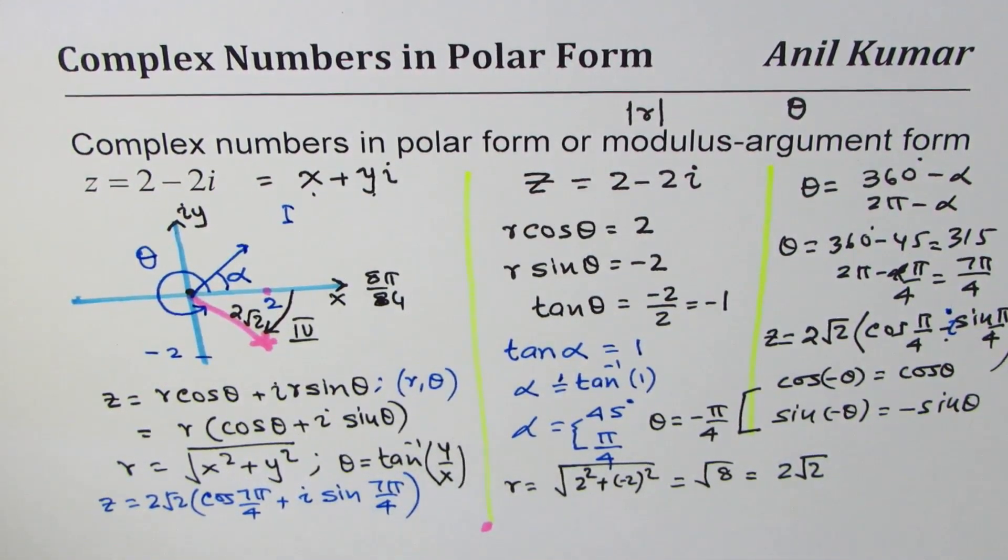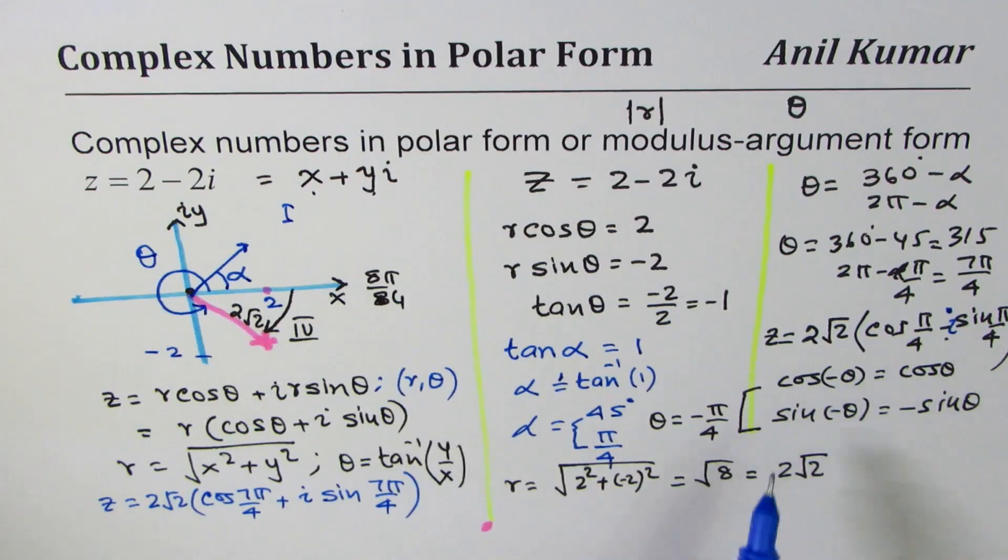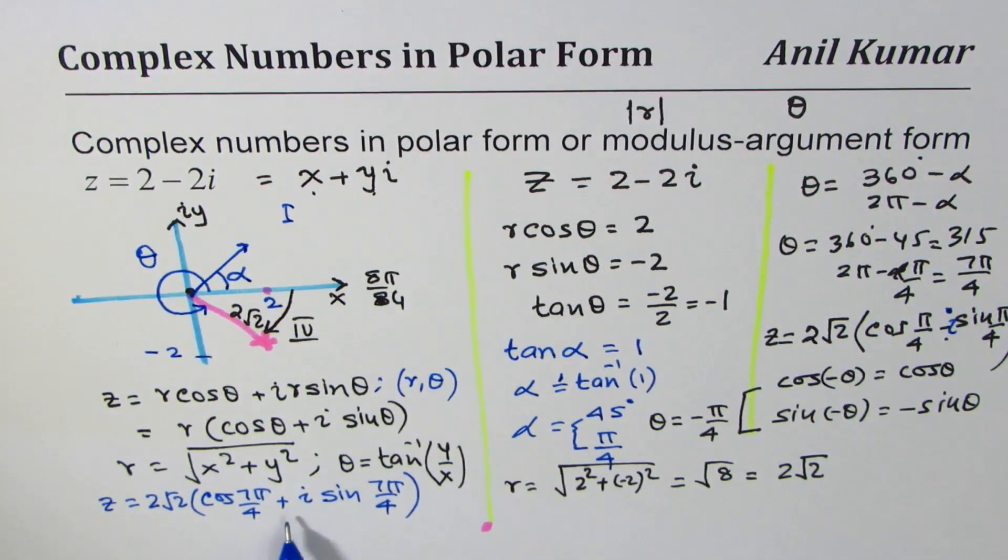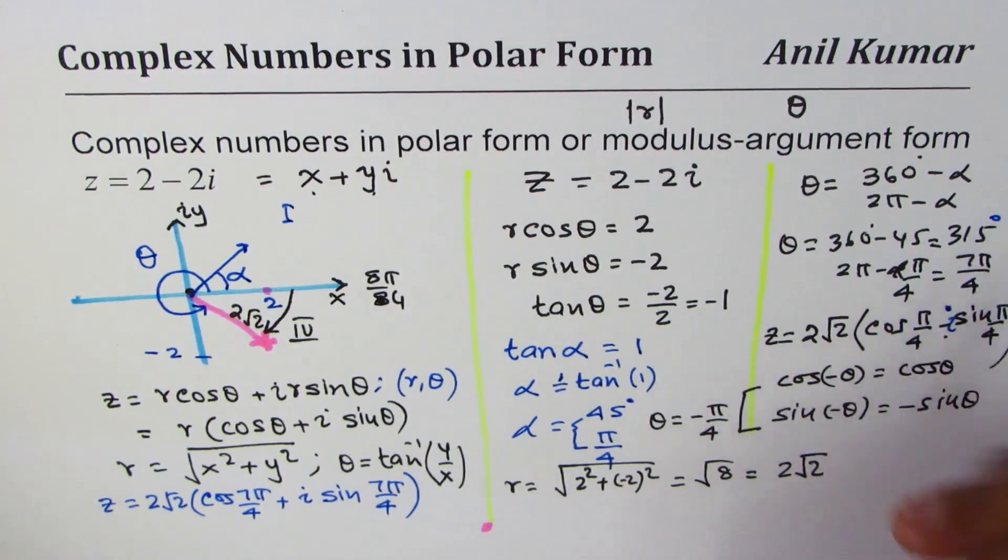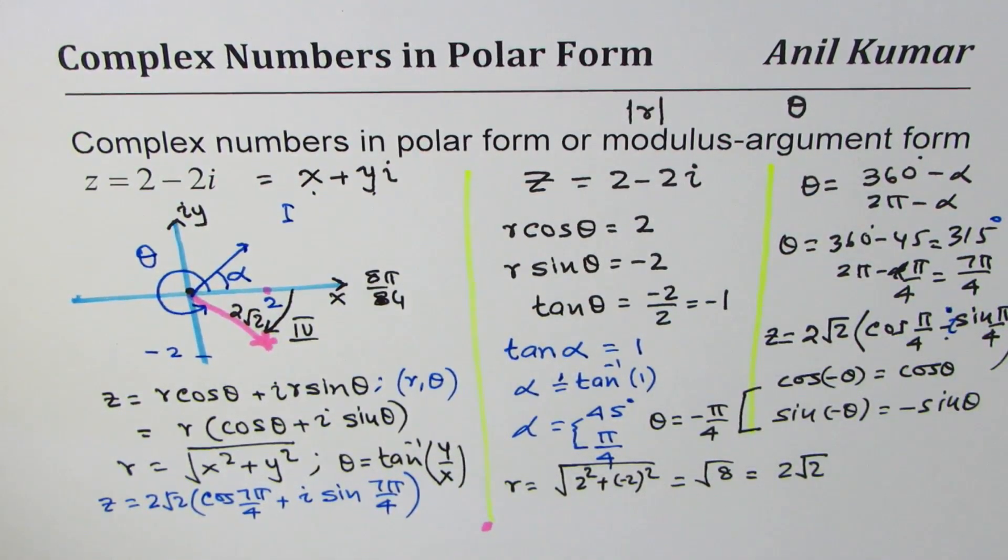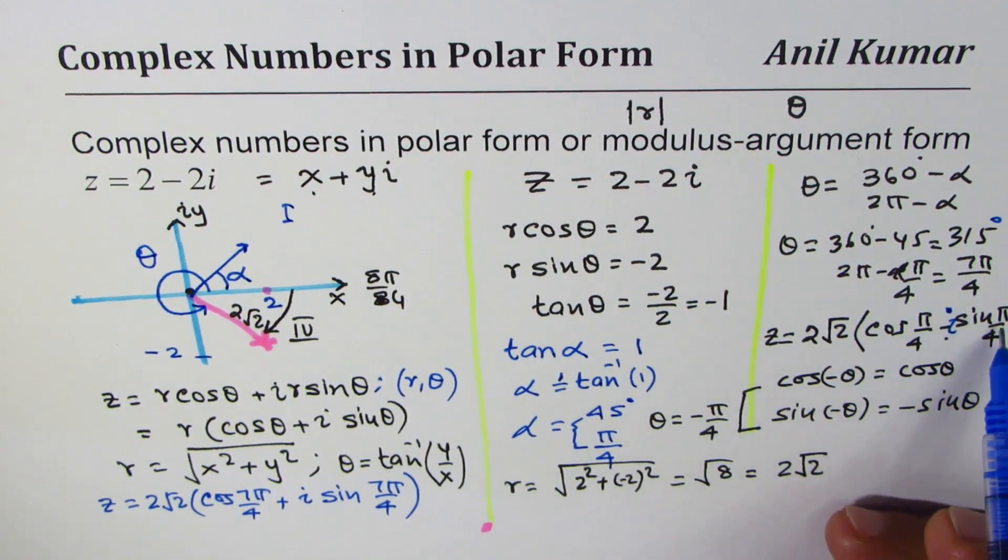That is also the right option when we are doing in radians. If you're working in degrees you can replace 7 pi by 4 with 315 degrees.